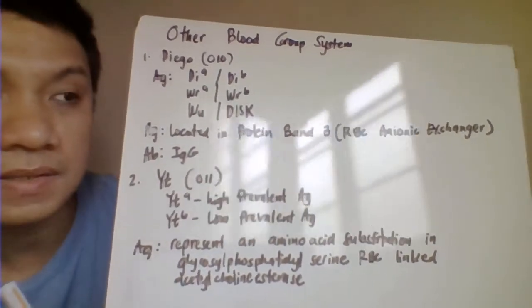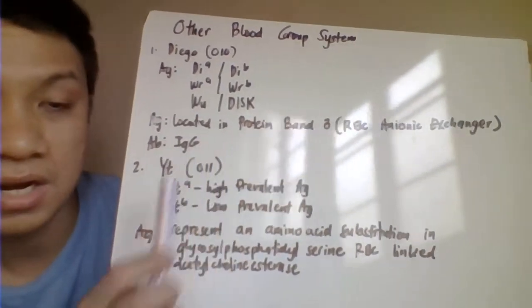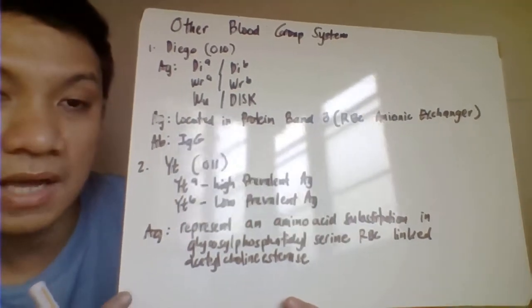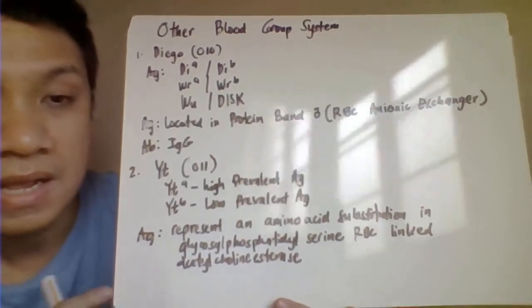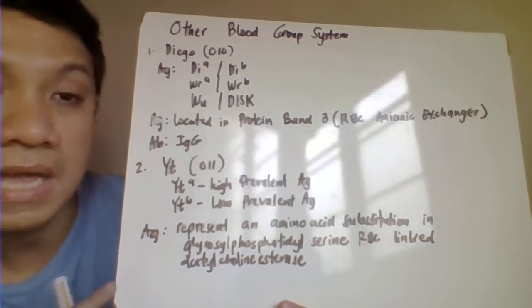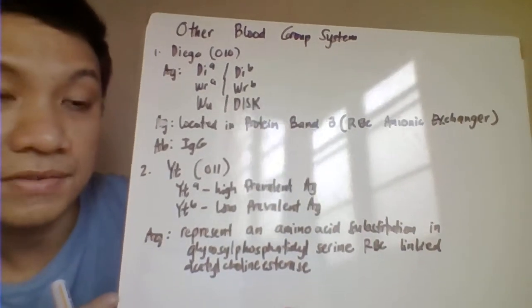Also known here as the RBC anionic exchanger. In terms of the antibody, the antibody with your Kidd blood group system is an IgG antibody. This one is implicated in your hemolytic transfusion reaction.